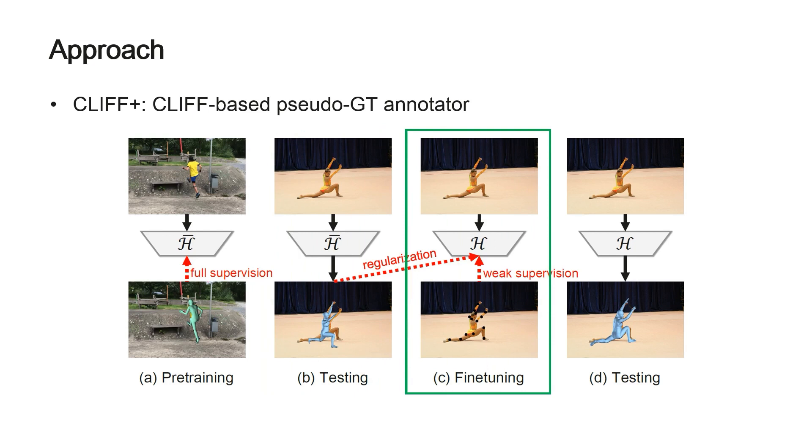Third, fine-tune the pre-trained model on the target dataset using ground truth 2D keypoints as weak supervision and the predicted SMPL parameters as regularization. Finally, test the updated model on the target dataset to get the final pseudo-ground truth.